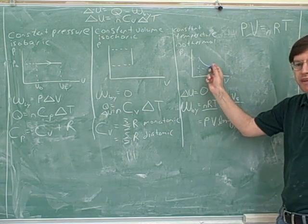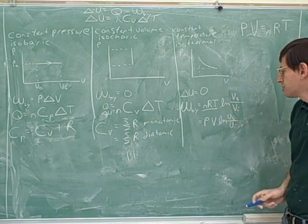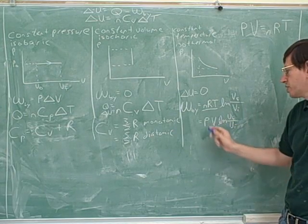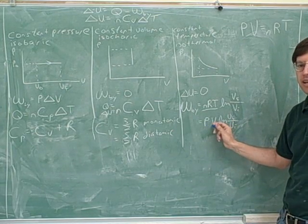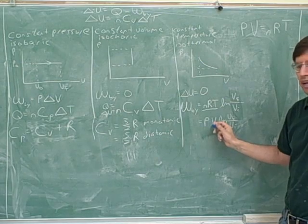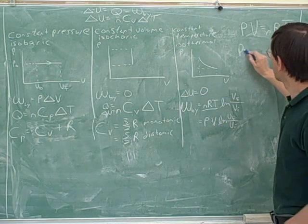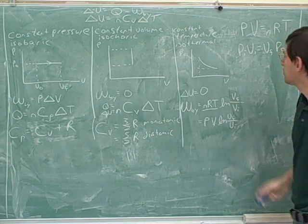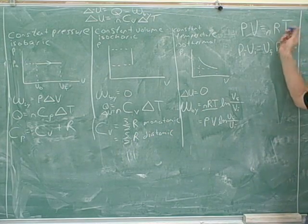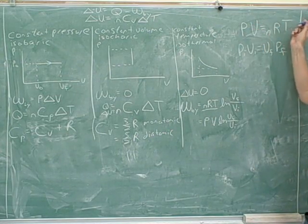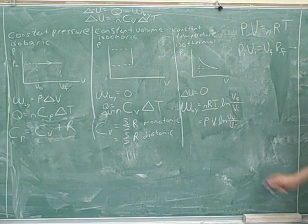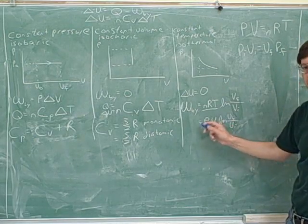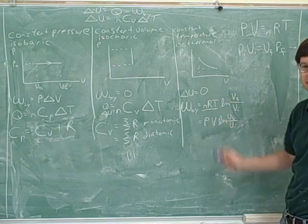Now, remember here, the pressure and the volume are changing. So what should we plug in for the, that's why we have V final here and V initial. So what should we plug in here, the initial or the final values? Well, it doesn't matter, because the whole point here, since the temperature is constant, P times V is a constant. So these would both give you the same thing. So you could plug in P initial, V initial, or P final, V final. You'd have to be consistent.